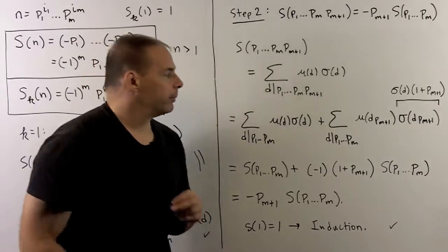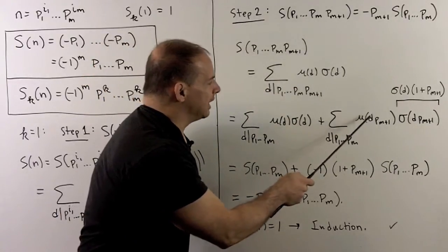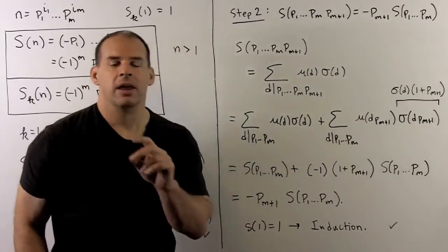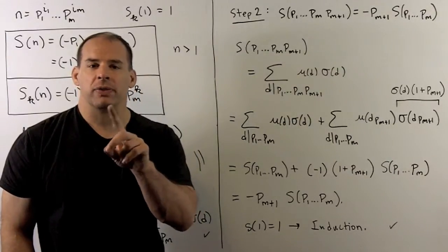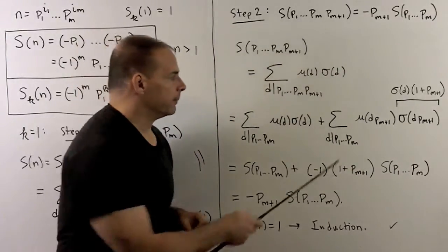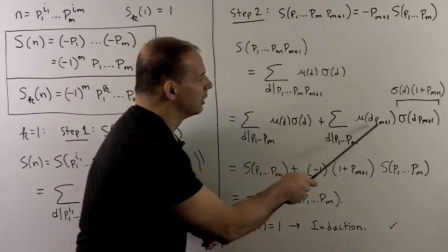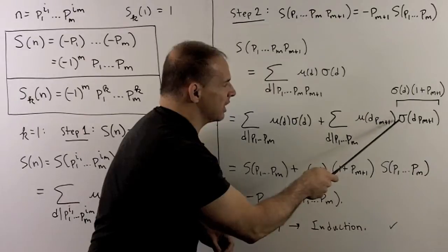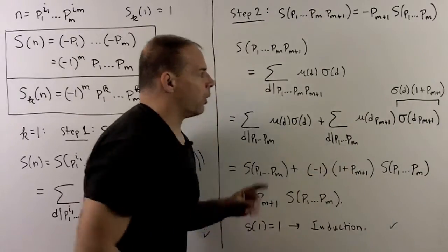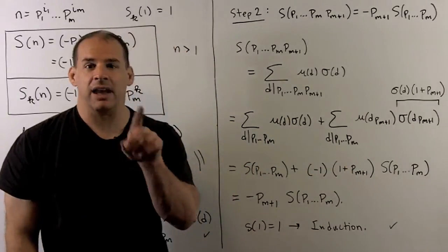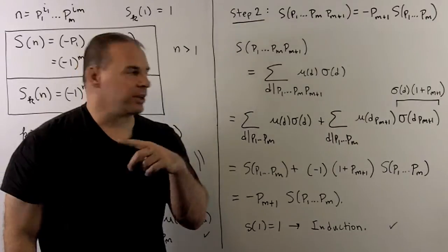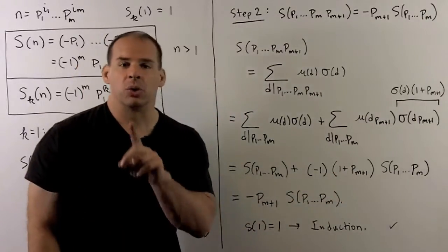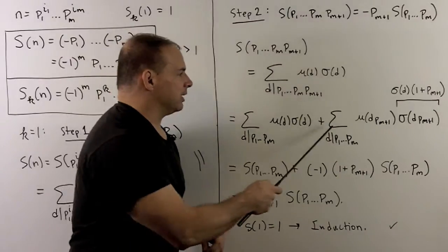Now you'll note, for mu of d times pn plus 1, that has one extra prime. So that's going to be minus 1 times mu of d. Then I have to calculate the sigma of d p to the n plus 1. Again, sigma is going to be a sum over the divisors of d p to the n plus 1. So we break it up into two sums as we did here.